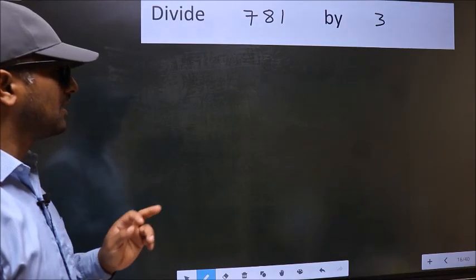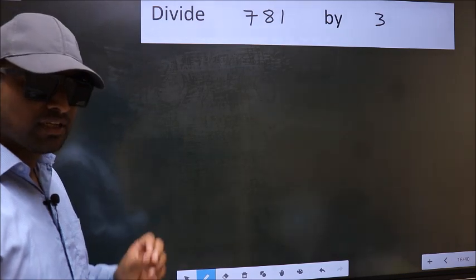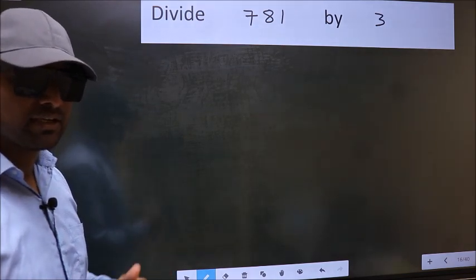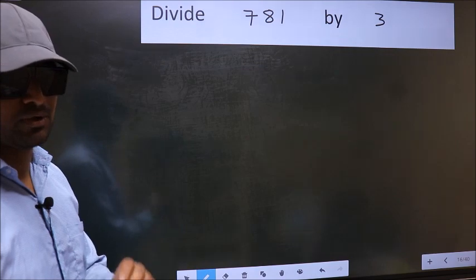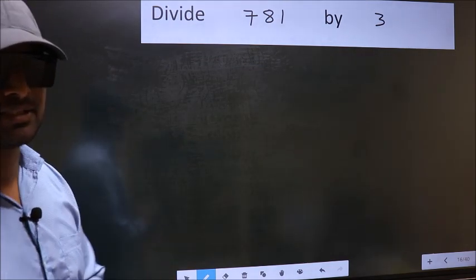Divide 781 by 3. While doing this division, many do this mistake. What is the mistake that they do? I will let you know. But before that, we should frame it in this way.